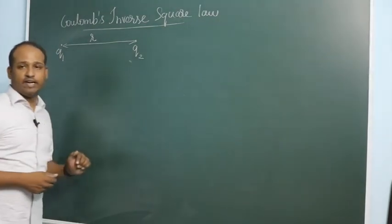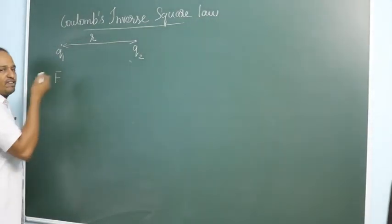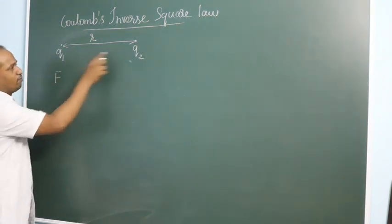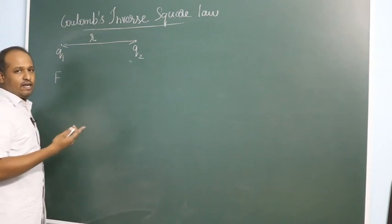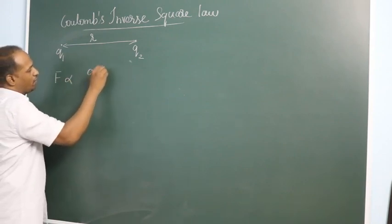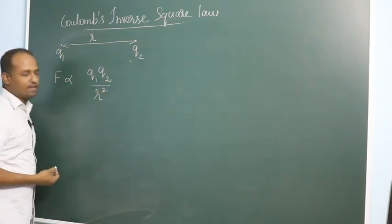Suppose two point charges separated by distance R, then the force of interaction - it may be attraction or repulsion depending on what kind of charges there are. Say if both are positive, then they are going to be repulsive. So force is going to be proportional to the product of the magnitude of charges and inversely proportional to square of the distance between them.